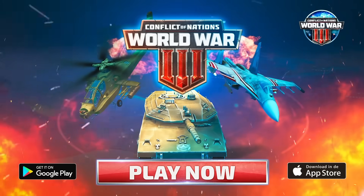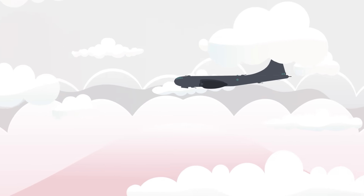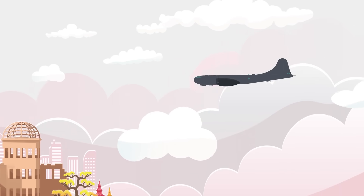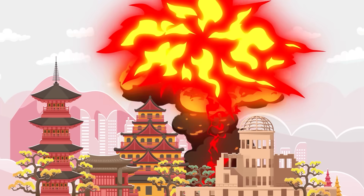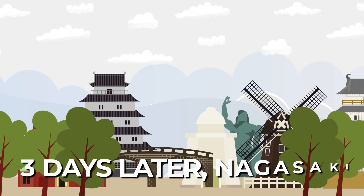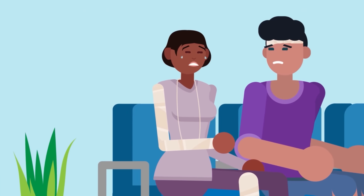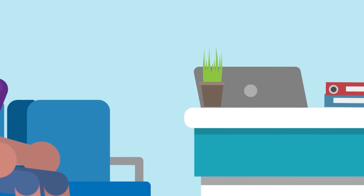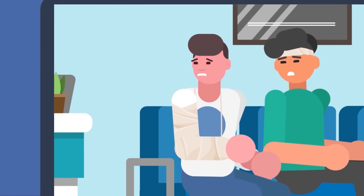On August 6, 1945, an American B-29 bomber flying low over the Japanese city of Hiroshima dropped the world's first atomic bomb on the city's unsuspecting inhabitants, immediately killing 80,000 innocent civilians. Three days later, a second bomb was dropped on the city of Nagasaki, killing a further 40,000 men, women, and children. In the aftermath of the bomb's initial explosions, tens of thousands more people would die excruciatingly painful deaths due to radiation exposure.